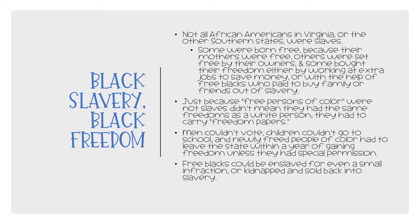Not all African Americans in Virginia or the other southern states were slaves. Some were born free because their mothers were free. Others were set free by their owners. And still others bought their freedom either by working extra jobs to save money or with the help of free blacks who paid to buy family or friends out of slavery. However, just because free persons of color were not slaves didn't mean they had the same freedoms as a white person. They had to carry freedom papers with them wherever they went. Men couldn't vote. Children couldn't go to school. And newly freed people of color had to leave the state within a year of gaining freedom unless they had special permission to stay. Free blacks could even be enslaved for a small infraction or kidnapped and sold back into slavery.